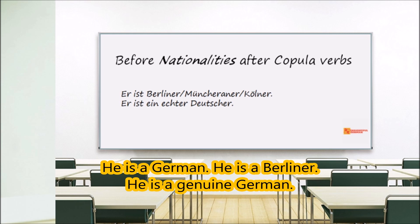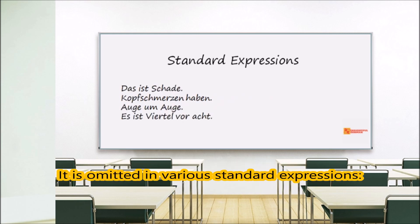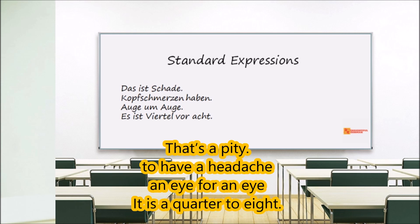It is omitted before nationalities after copula verbs, but is always inserted when the nationality is preceded by an adjective. For example: 'Er ist Deutscher.' 'Er ist Berliner.' 'Er ist Münchner.' 'Er ist Kölner.' But: 'Er ist ein echter Deutscher.'